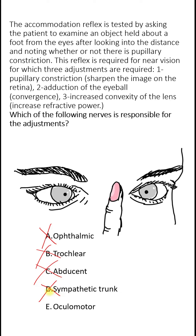The nerve responsible is the oculomotor nerve. The oculomotor nerve can serve all three adjustments because it carries parasympathetic fibers. These parasympathetic fibers supply the sphincter pupillary muscle and cause pupillary constriction.